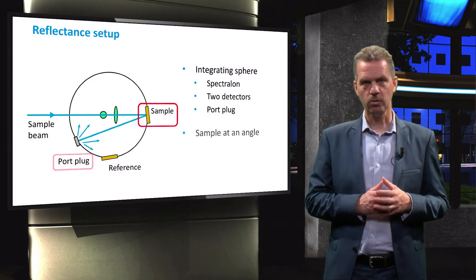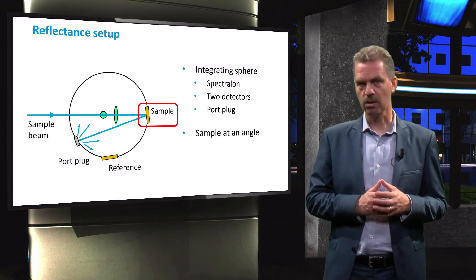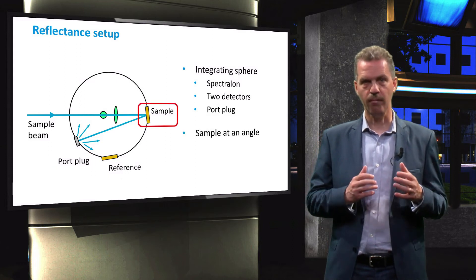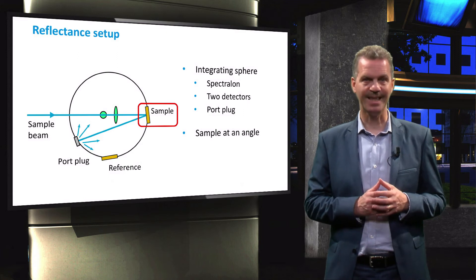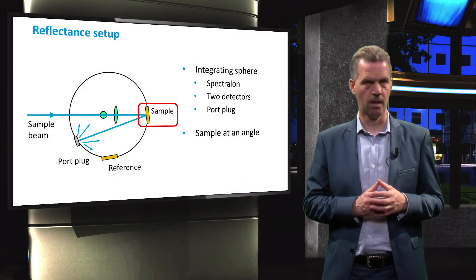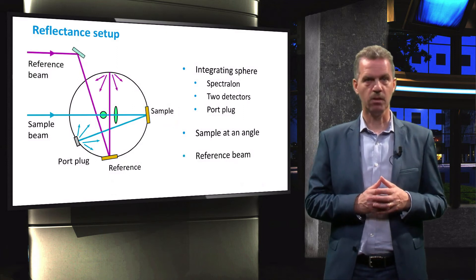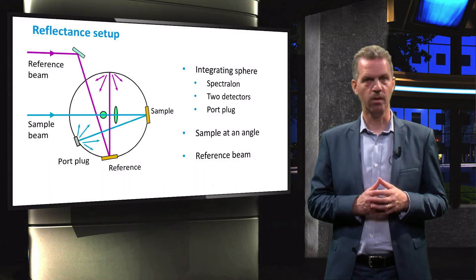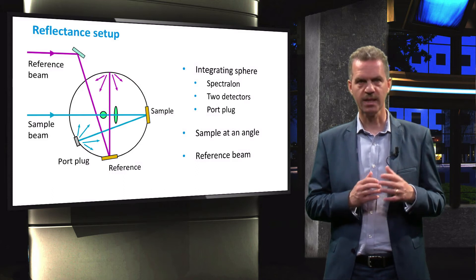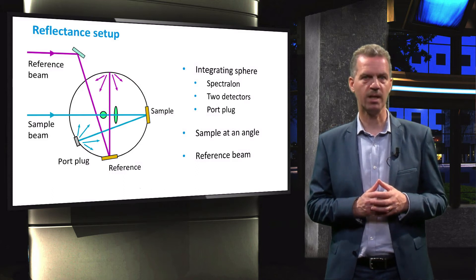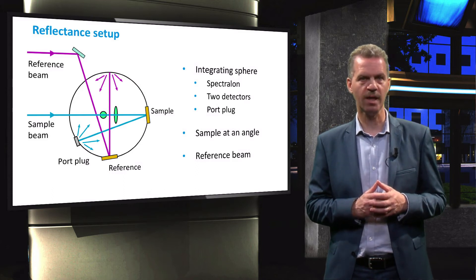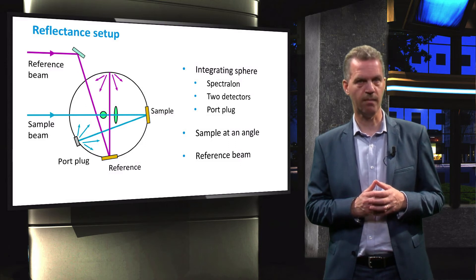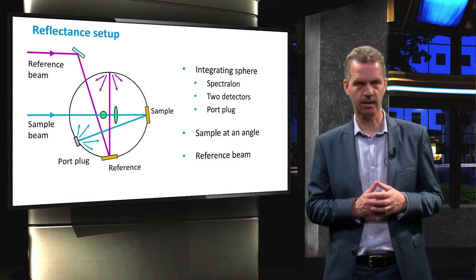In order to direct the specular reflected beam towards the port plug, the sample is placed at an angle. A reference beam can be directed into the sphere by a mirror, such that the reflectance of the chamber can be determined and corrected for when the reflectance of the sample is calculated.